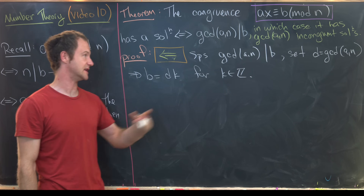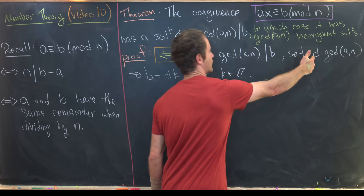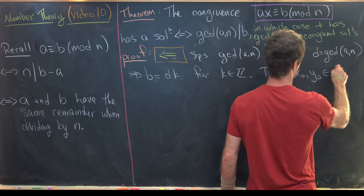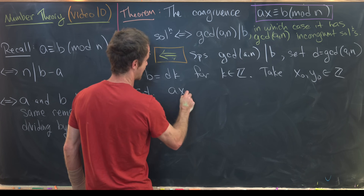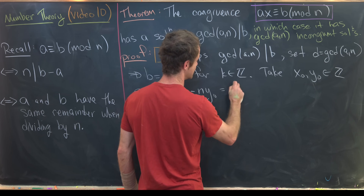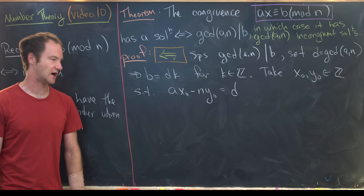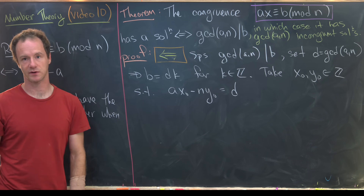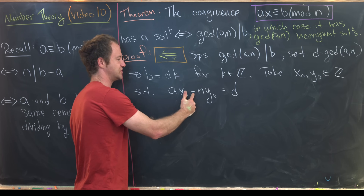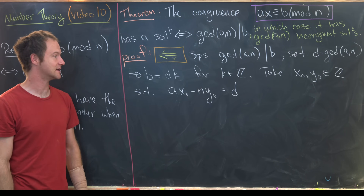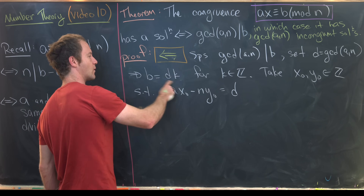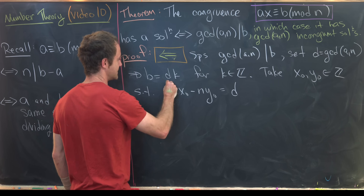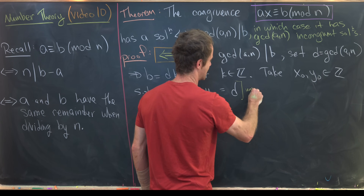We use Bézout's identity with gcd(a, n) = d. Take integers x₀ and y₀ such that ax₀ minus n·y₀ equals d. That's always possible since d equals the GCD, which can always be rewritten as a linear combination of the two numbers. We want it equal to b, not d, so we multiply the entire equation by k.